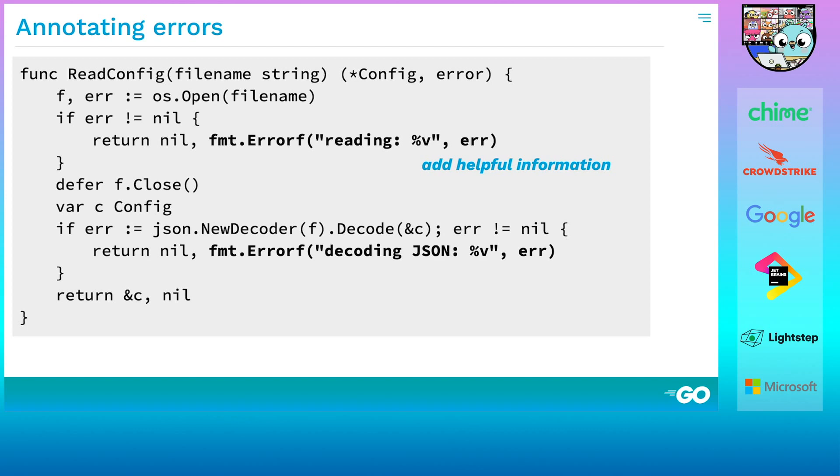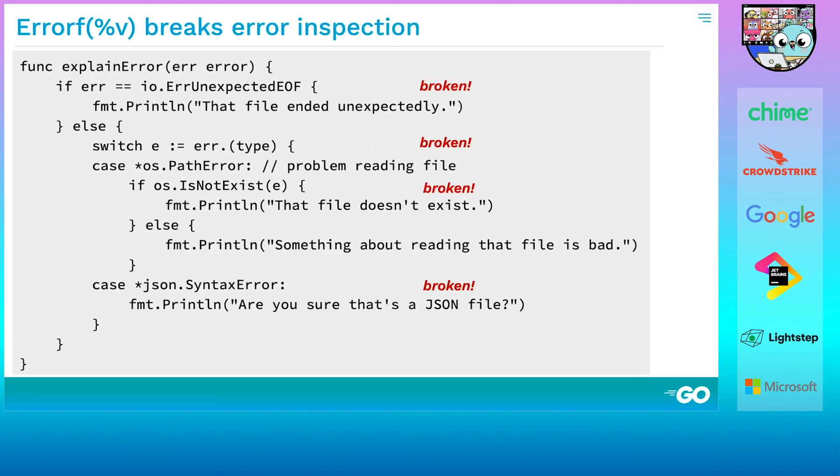Now let's return to our readConfig function and try to improve it by adding some extra information to the error it returns. We do this with the best of intentions. We're just trying to help our users. But we've completely broken explainError. That's because the %v specifier in fmt.errorf retains nothing from the argument you pass to it except its string value. So we lose the identity and type of the error. This is a problem with Go errors, at least out of the box. The natural way to annotate for people will break programs.